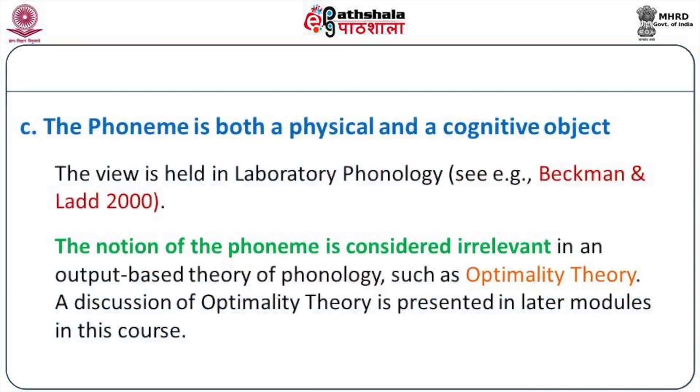The third notion of the phoneme is that it is both a physical and cognitive object. The approach to phonemics called laboratory phonology assumes that the phoneme should be looked at both as a physical object as well as a cognitive object. A most recent theory known as optimality theory does not think that the notion of the phoneme is relevant, because its main concern is with the output form of speech sounds. For the present module and this course, we assume the view that the phoneme is both a physical object as well as a cognitive object.